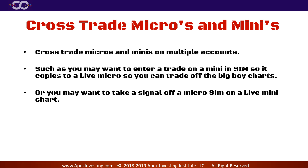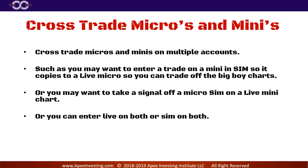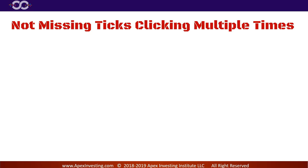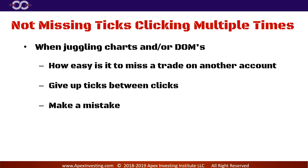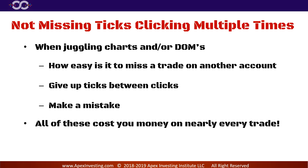Or you may want to take a signal off a micro sim or a live mini chart and do the opposite. You can enter live on both or sim on both, whatever you want to do. This will help you not miss ticks, which adds up to a lot of dollars lost as you're clicking. When you're juggling charts and DOMs, how easy is it to miss a trade on another account, give up ticks between clicks, or make a mistake? All of these cost you money on nearly every single trade you make.